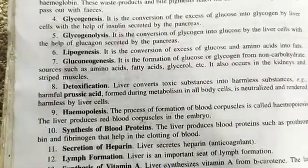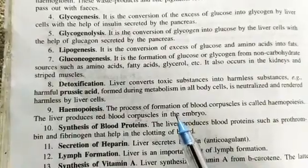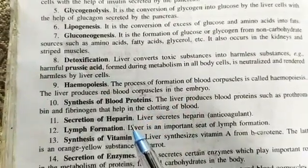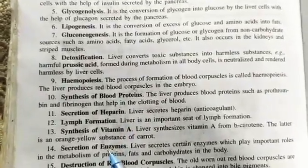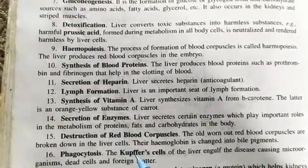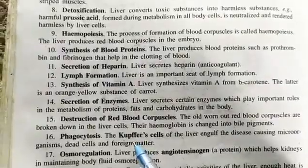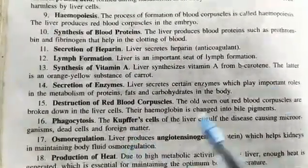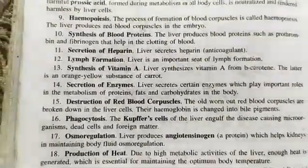Further functions include hemopoiesis — the formation of blood corpuscles is controlled by the liver — synthesis of blood proteins, synthesis of heparin, lymph formation, synthesis of vitamin A, secretion of enzymes, destruction of red blood corpuscles, and phagocytosis by Kupffer cells. The liver also performs osmoregulation and production of heat.